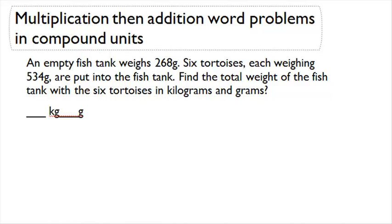An empty fish tank weighs 268 grams. Six tortoises, each weighing 534 grams, are put into the fish tank. Find the total weight of the fish tank with the six tortoises in kilograms and grams.